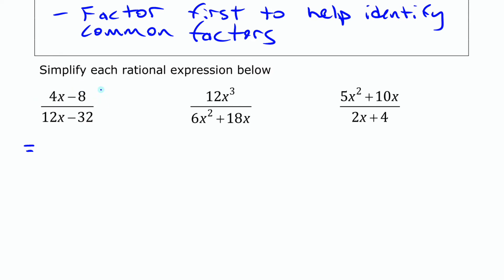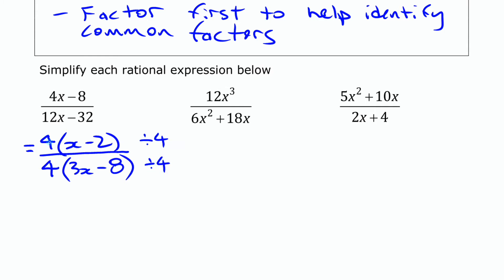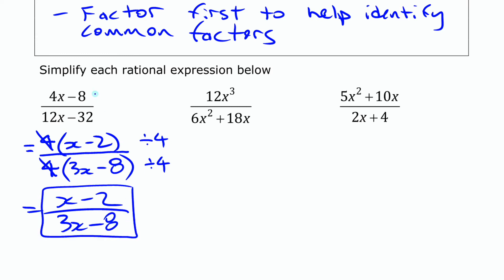The numerator has a common factor of 4, so I could write it as 4 times (x minus 2) if I factor out that 4. The denominator also has a common factor of 4; factoring that out gives 4 times (3x minus 8). Since both have a common factor of 4, we divide the top and the bottom by 4 and cross those out, leaving us with (x minus 2) over (3x minus 8). This fraction is the same as the original for any permitted value of x — just in simpler terms because you've divided out the factor of 4.